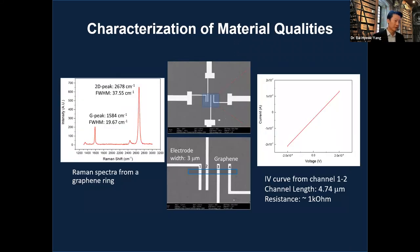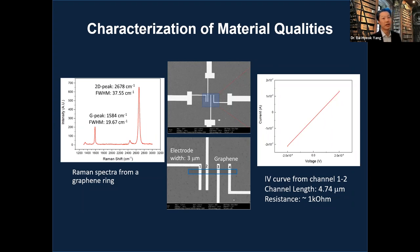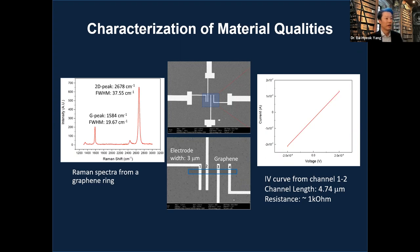We characterize graphene using Raman spectroscopy — the G-peak and 2D peak with their full-width at half-maximum confirm good quality CVD-grown graphene. SEM images show the graphene structure used to characterize conductivity and other properties. IV characteristics from a graphene channel with length 4.74 microns give a resistance of about 1 kilo-ohm, consistent with expectations.